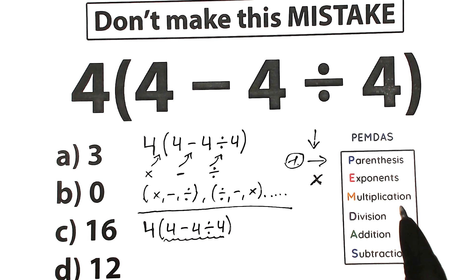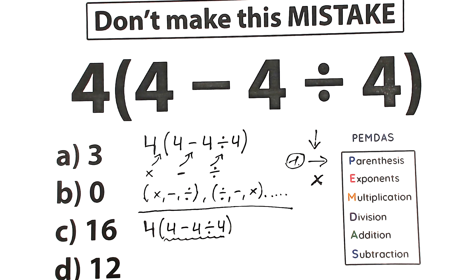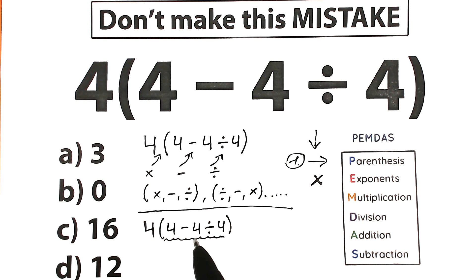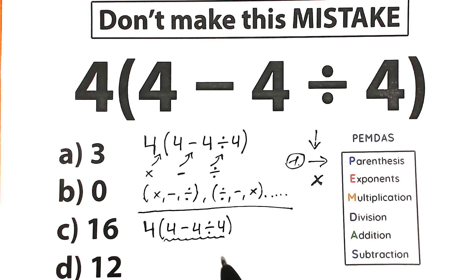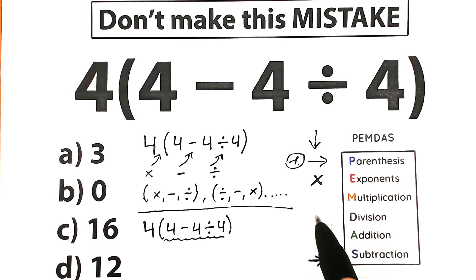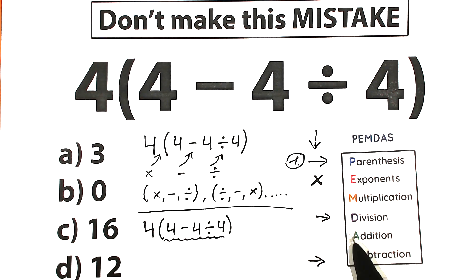Inside the parentheses we have a complicated expression — not a simple 4 plus 4 or 4 divided by 4. We have subtraction and we have division. So we need to understand the correct order of operations here. We have subtraction here and division here.